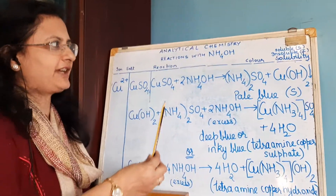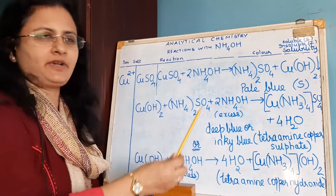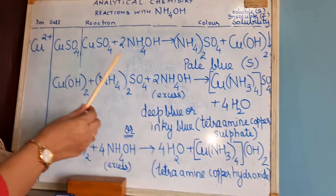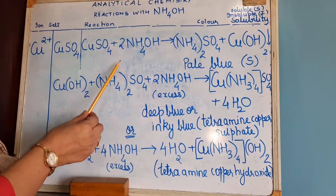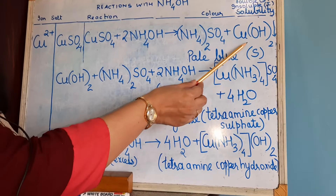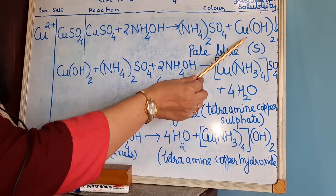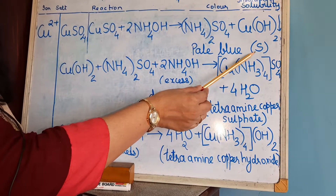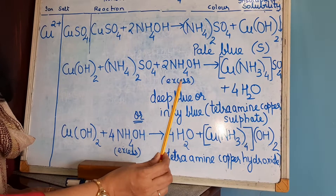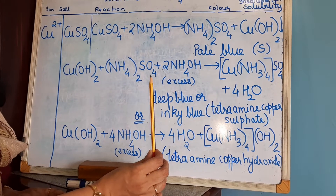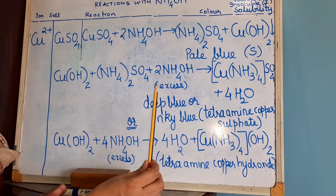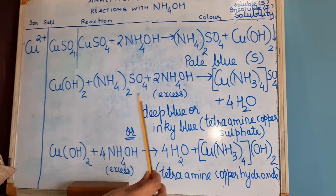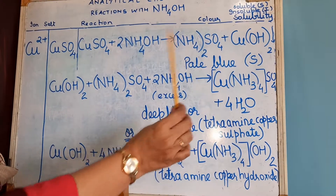We will continue with reactions of ammonium hydroxide using copper salts. Copper salts will react with ammonium hydroxide to form a pale blue precipitate of copper hydroxide. In this case it is soluble in excess. If you remember in the earlier sessions we have seen reactions with sodium hydroxide, with copper salts it was a pale blue precipitate but insoluble in excess.